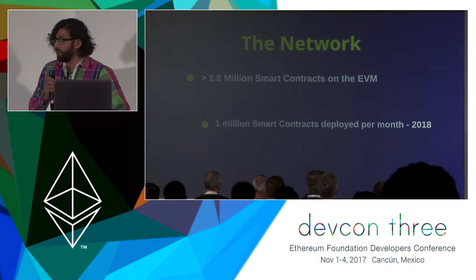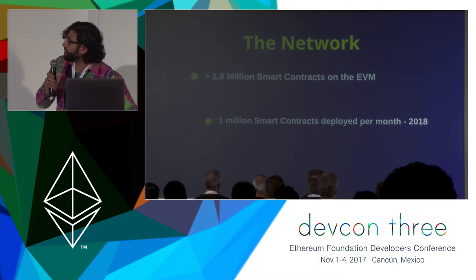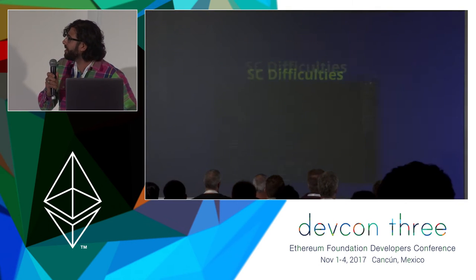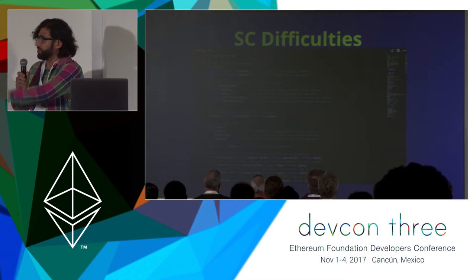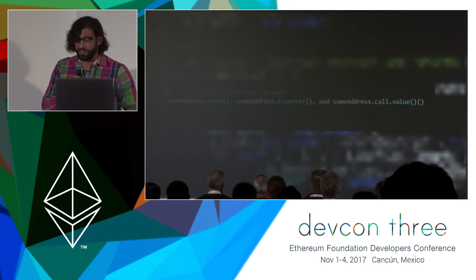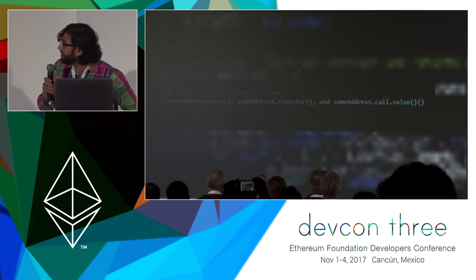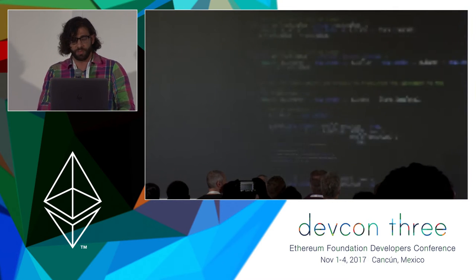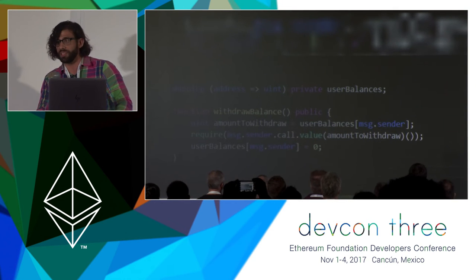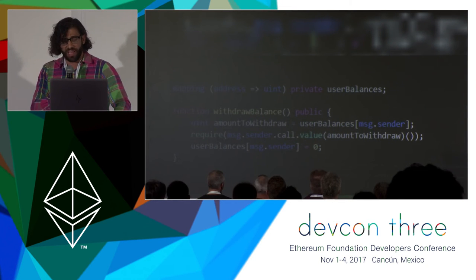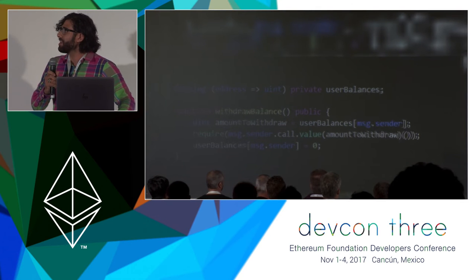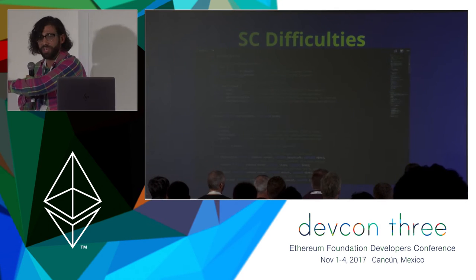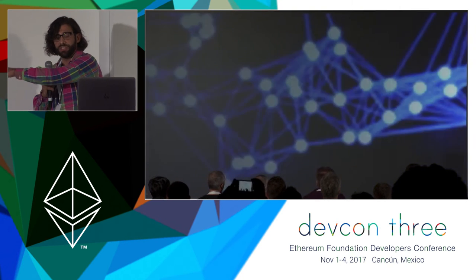What else are we up against? Difficulty in smart contracts. We have basic nuances like the differences between send, transfer, and call.value, and then we have more advanced nuances like re-entry issues. All this adds to creating — going back into that smart contract lifecycle — and running through it over again because you have to add a feature or fix a bug.